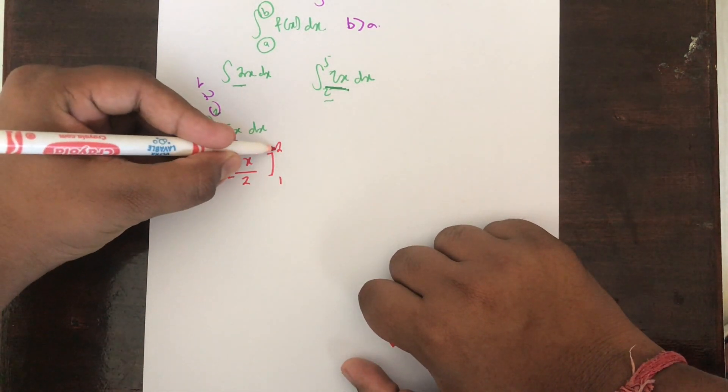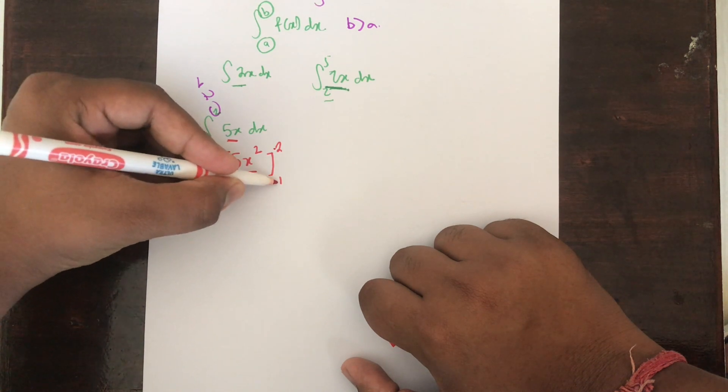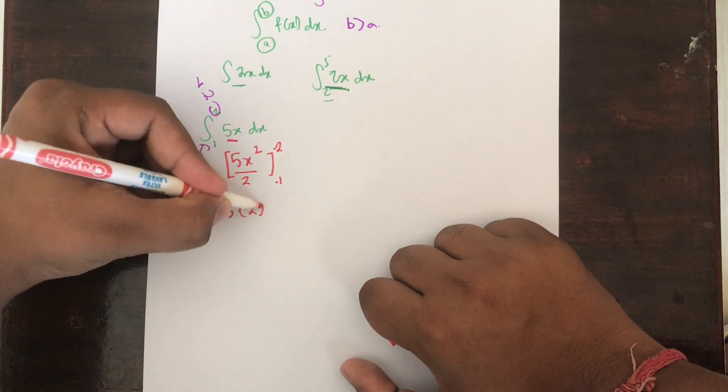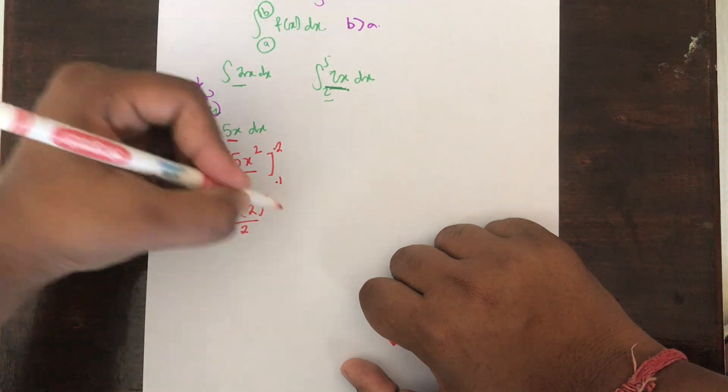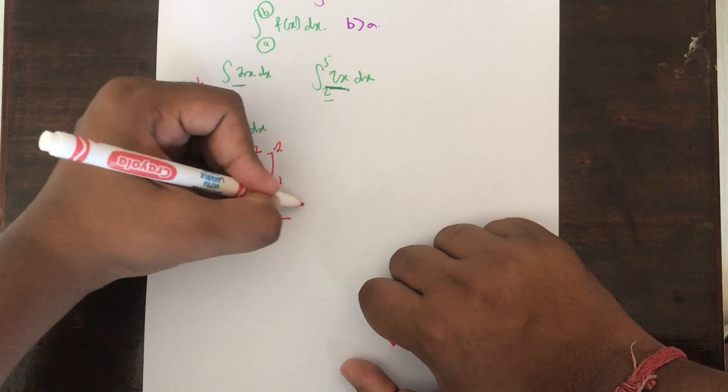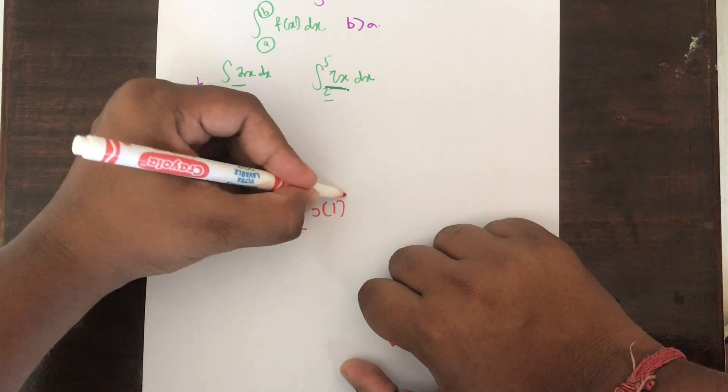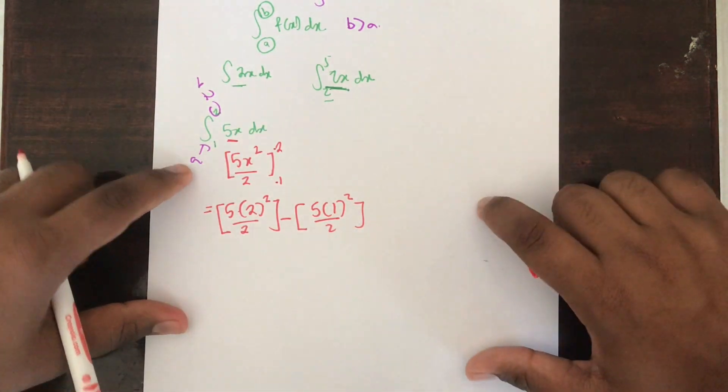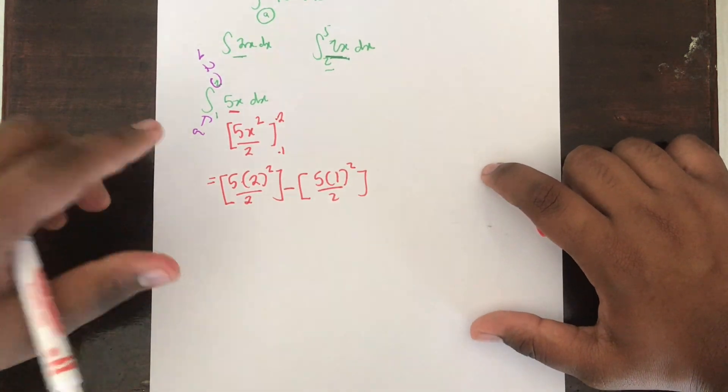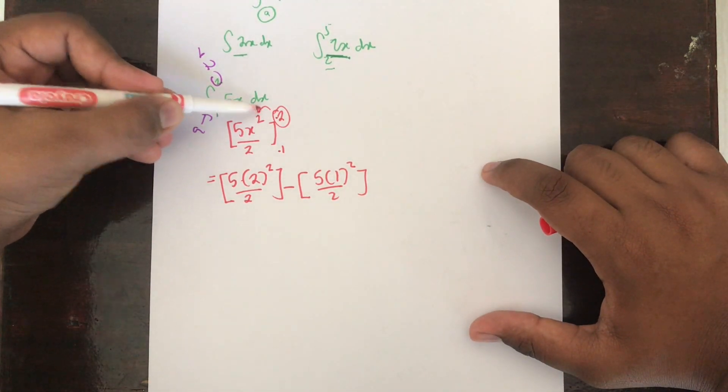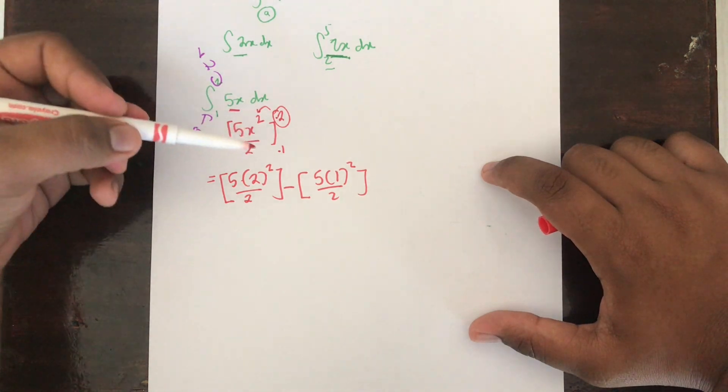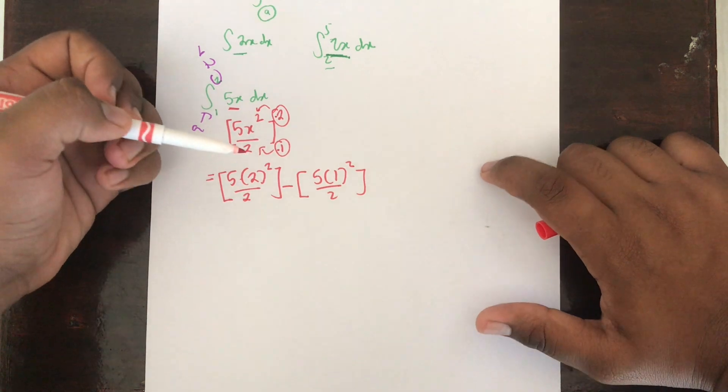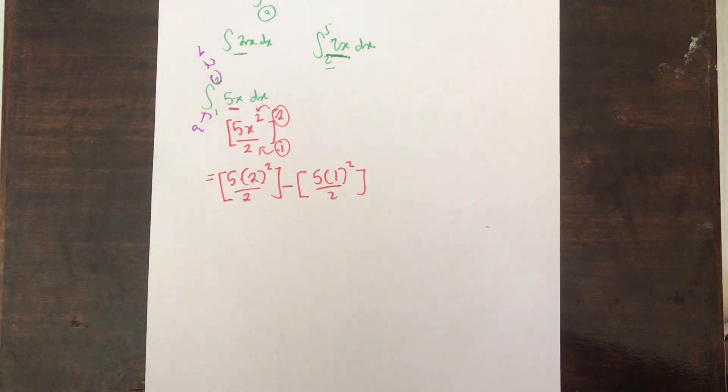Now is where you do the definite integration. You substitute this as x and then this as x. This gives you 5 into 2 squared divided by 2 minus 5 into 1 squared divided by 2. I'm putting the brackets to make it clearer. You substitute the greater one first, then the smaller one, and then you subtract them.